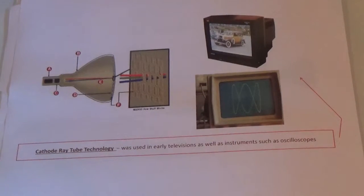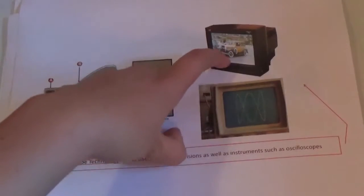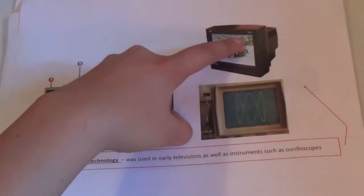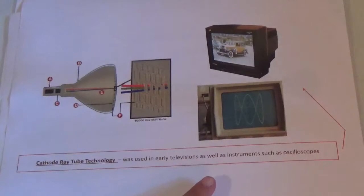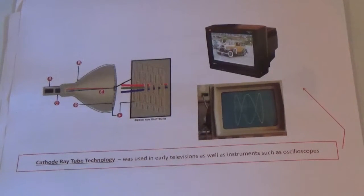This cathode ray was used in early TVs to create the image on the front, and in instruments such as the oscilloscope and other measuring instruments.